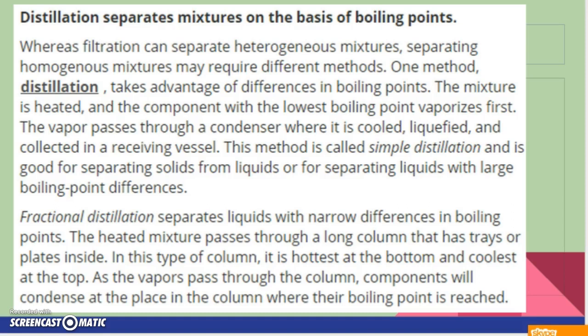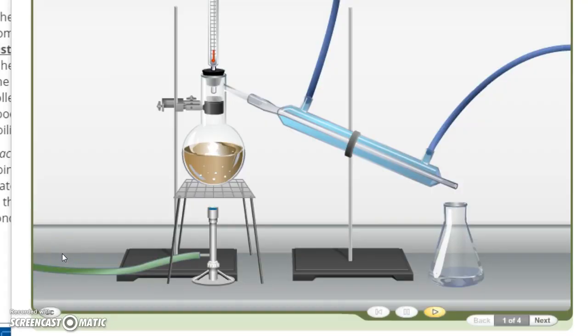The heated mixture passes through a long column that has trays or plates inside. In this type of column, it is hottest at the bottom, coolest on top, and the vapors pass through the column. Components will condense at the place in the column where their boiling point is reached. So here is an example of how distillation works.